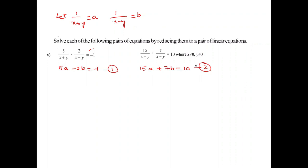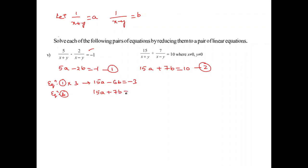Multiplying equation 1 by 3 gives 15A minus 6B equals minus 3. Keeping equation 2 as is: 15A plus 7B equals 10. Subtracting, the A terms cancel, leaving minus 13B equals minus 13.